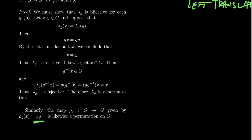The same argument works for right translation. Note that ρ_g is defined with an inverse sign: ρ_g(x) = xg^{-1}. The analogous statements hold for right translation — we're focusing on left translation here just so we don't have to bother with that extra inverse later.